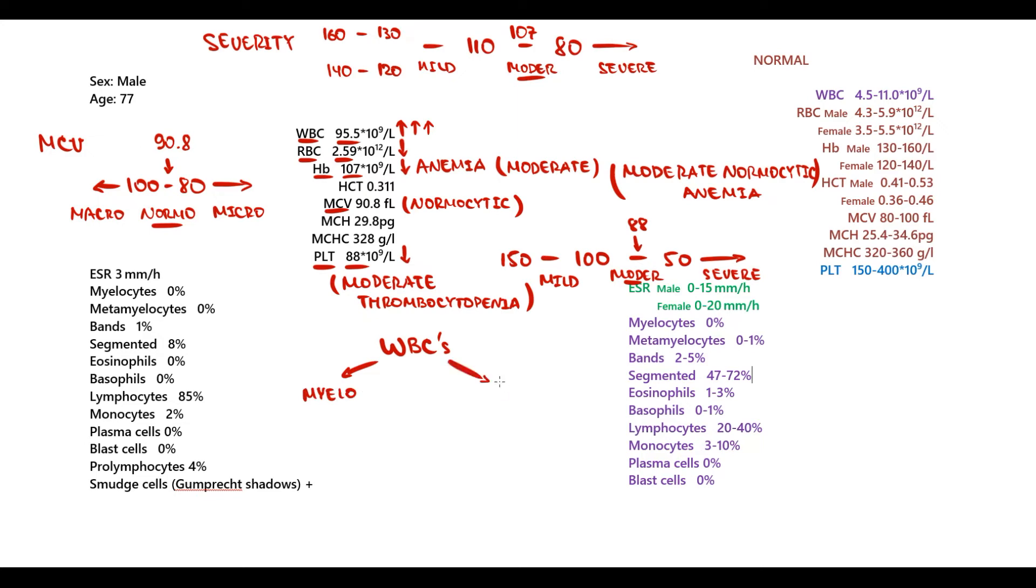Myelocytes consist of monocytes, basophils, eosinophils, and neutrophils. The first cells we look at are blast cells, because in normal state there are no blast cells in peripheral blood. In this case, there are no blast cells, so two possibilities left: lymphocytes or myelocytes.